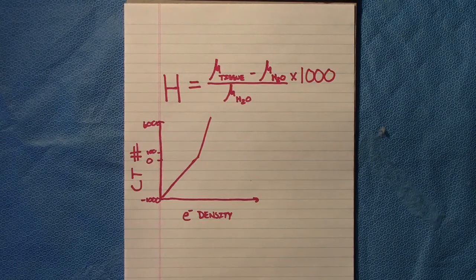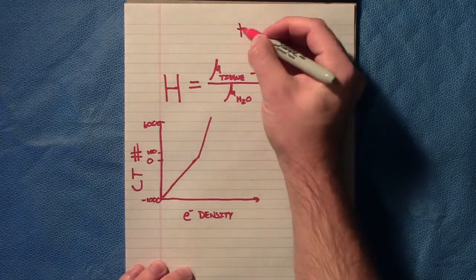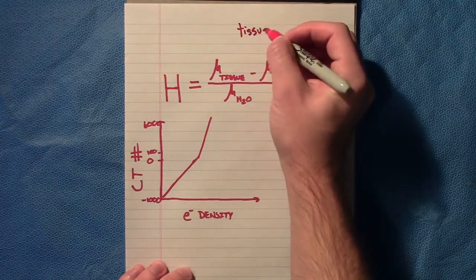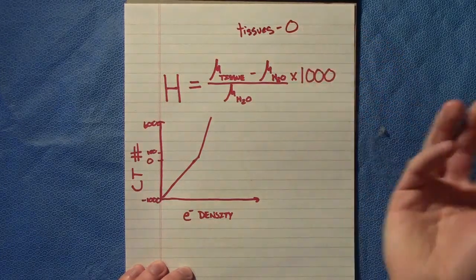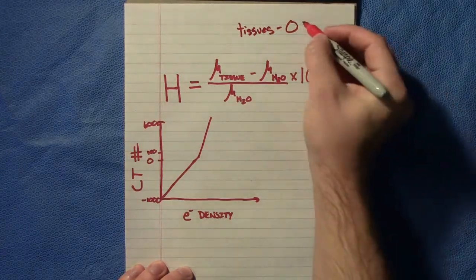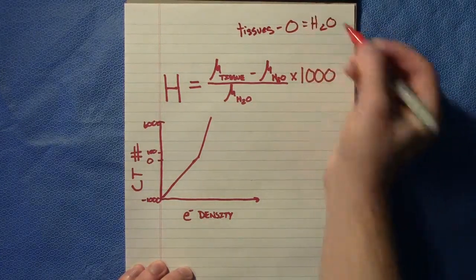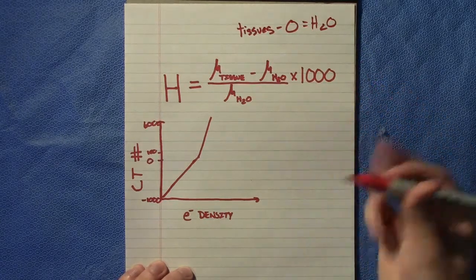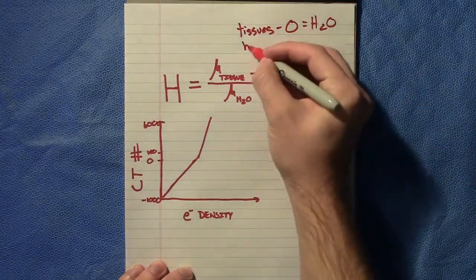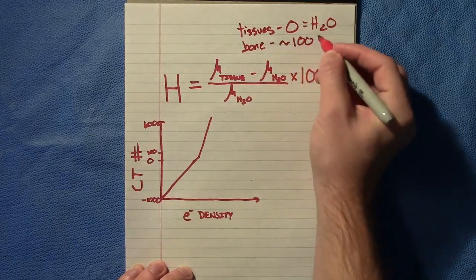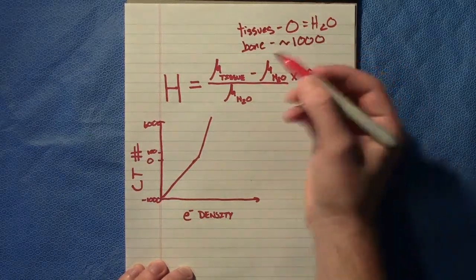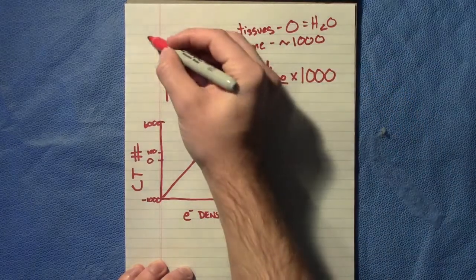In most tissues, and we're talking about soft tissues, we're going to have a Hounsfield unit of approximately zero, same for water. Once we start getting to more dense materials, say bone, we're looking at around a thousand, and for vacuum or air it would be negative one thousand.